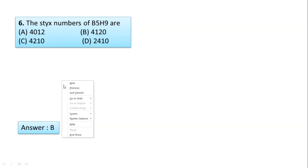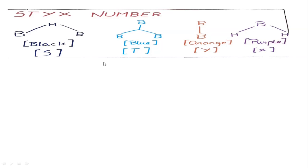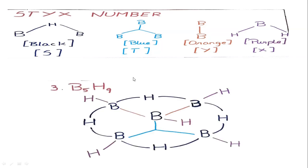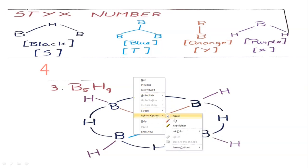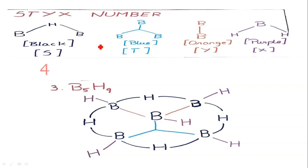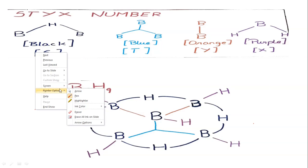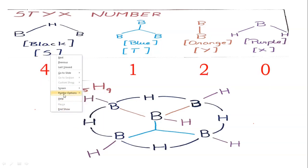Question number 6: The Stox number of B5H9, a boron hydride. You see the structure of B5H9. In this Stox number, B-H terminal bond is given as y, B-B bond (bridge bond) is given as t, B-B bond (square bond) is given as y, and B-H-B bridging bond is given as x.